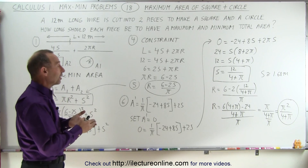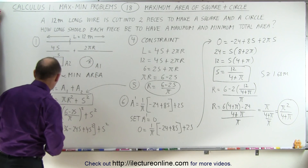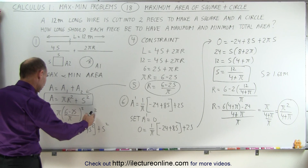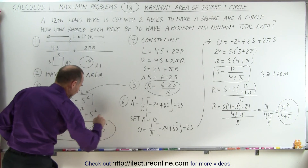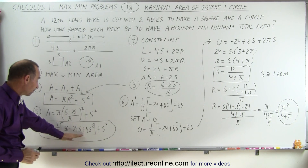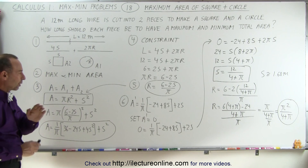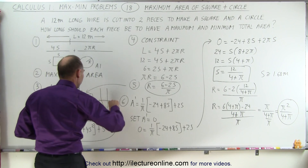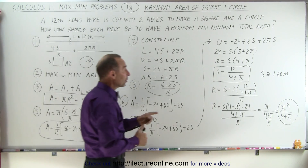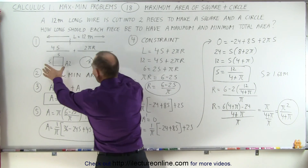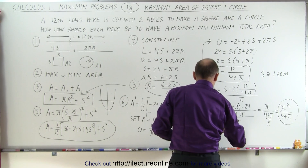Did we find the maximum or minimum? Going back to the area equation in terms of s, notice it is a quadratic equation where the squared terms are both positive — that means we have a parabola that opens upward. So the values of r and s we found give us the minimum value of the area.